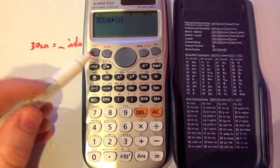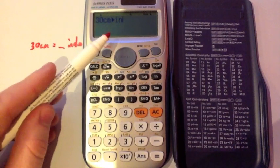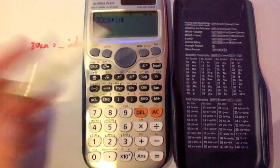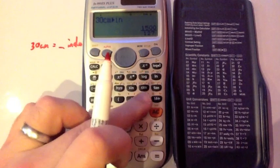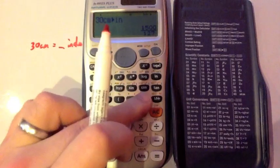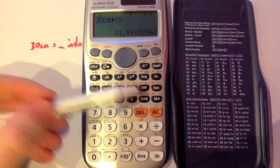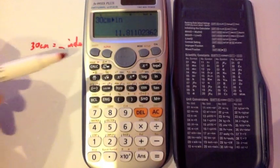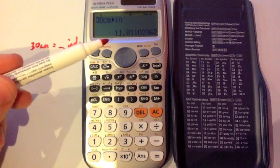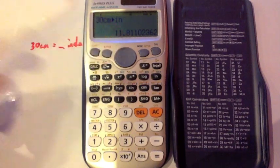And as you can see, it's put the units after our 30, so we've now got 30 centimeters, an arrow and then inches. And then if we press equals, it'll come up as a fraction. So what I'm going to do is just press the SD button and that converts into the decimal. So 30 centimeters in inches would be 11.1811 and so on.